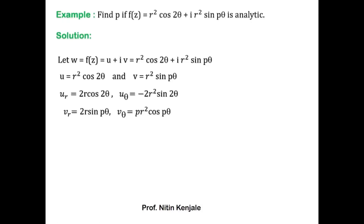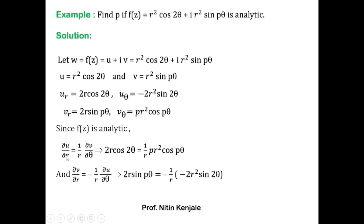Now we apply the Cauchy-Riemann equations in polar form, since f(z) is analytic. Using ∂u/∂r = (1/r)·∂v/∂θ and substituting the values: 2r·cos(2θ) = (1/r)·p·r²·cos(pθ). Simplifying, the r cancels to give 2r·cos(2θ) = p·r·cos(pθ). Comparing both sides, we get p = 2.